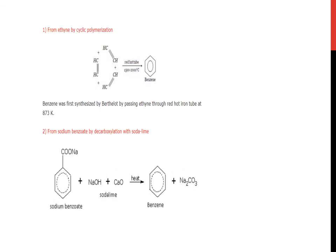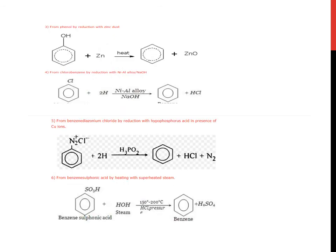Preparation of benzene. Number one, from ethyne by cyclic polymerization: when you take ethyne, three moles of ethyne in red hot iron tube, then it gives benzene. From sodium benzoate by decarboxylation with soda lime: when sodium benzoate is added to soda lime, that is calcium oxide and sodium hydroxide, when heated it gives benzene and sodium carbonate.